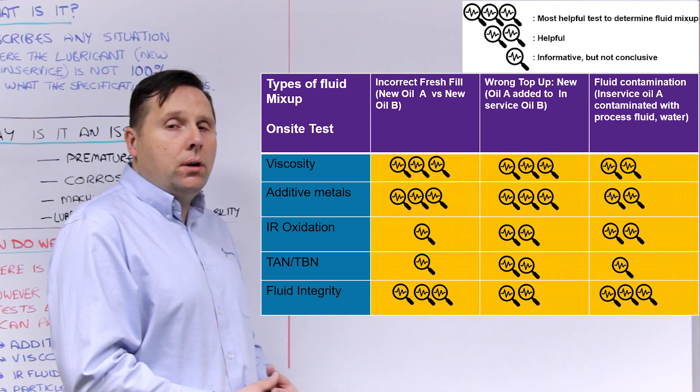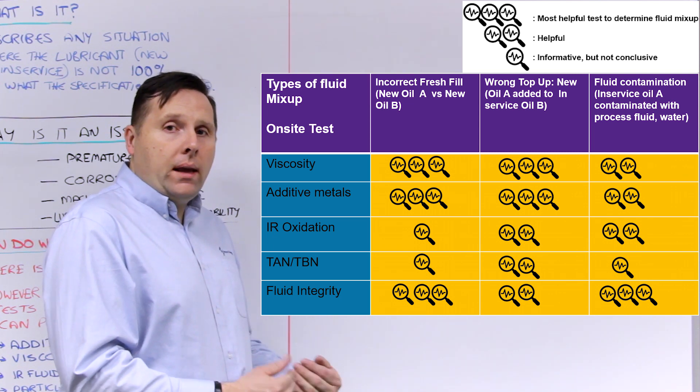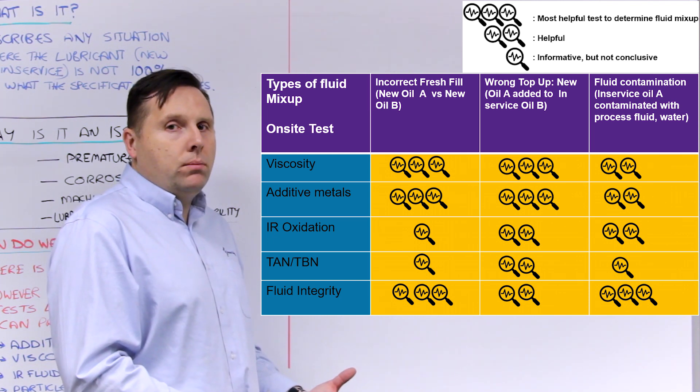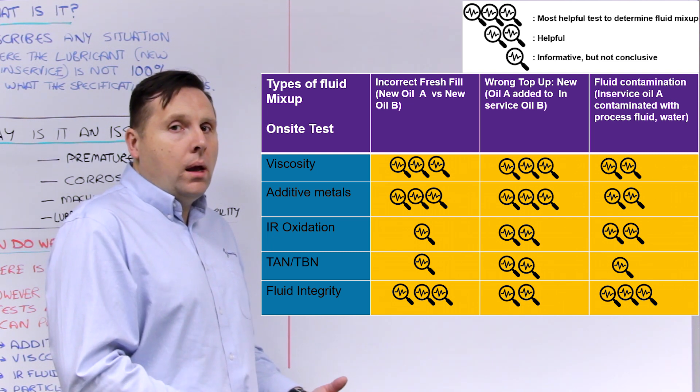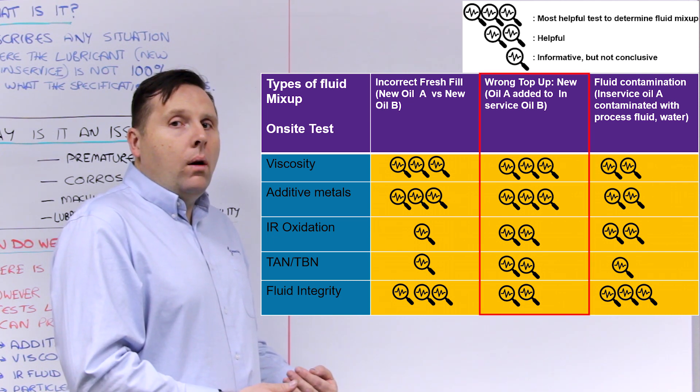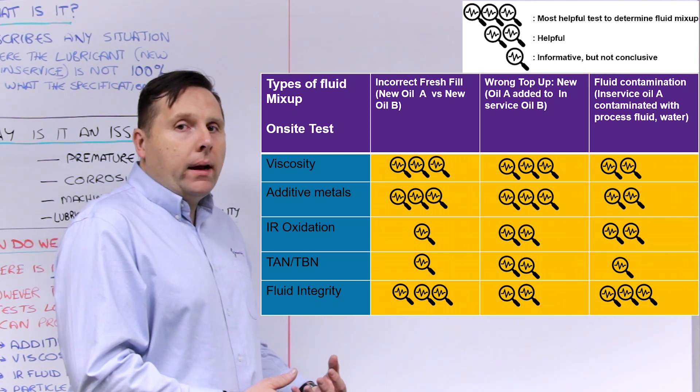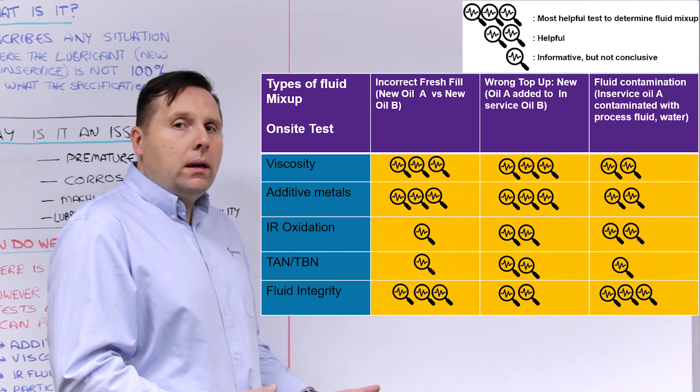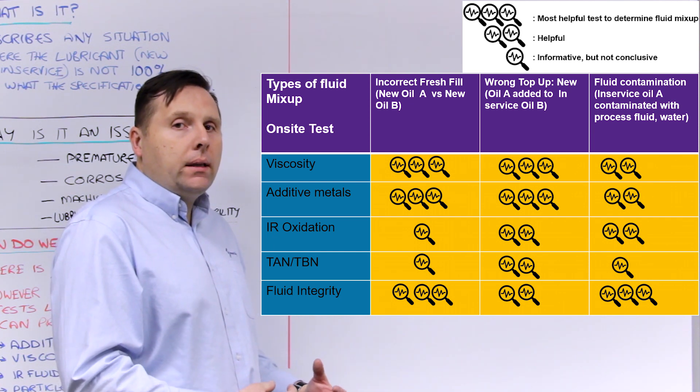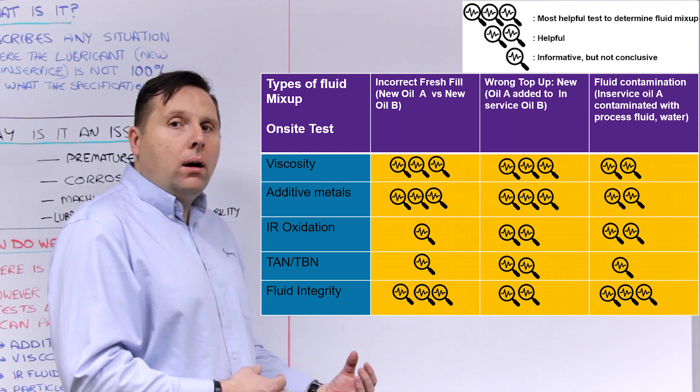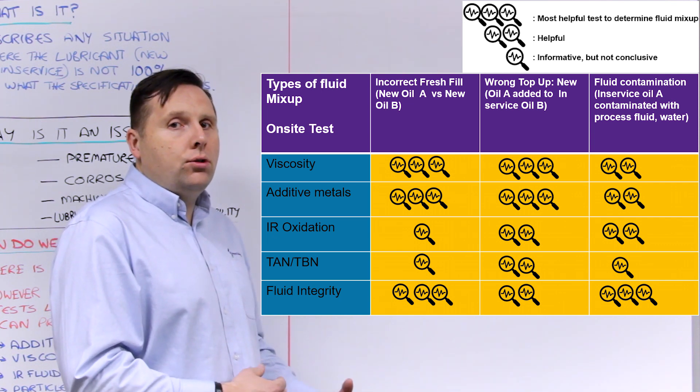You can also have a situation where the viscosity is different. In that case, viscosity measurement may be the first clue that something is wrong. Other situations occur where you have a new oil and an in-service oil where the additive packages are quite different. These tables show a variety of different ways to detect fluid mix-up, and each test has certain strengths depending on the condition you're looking for.